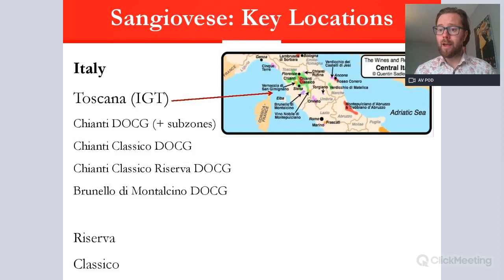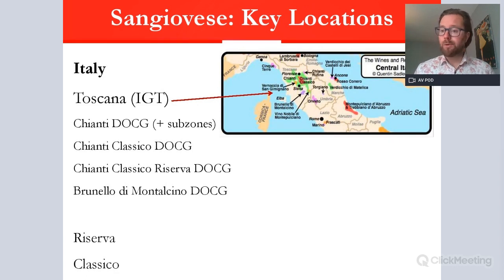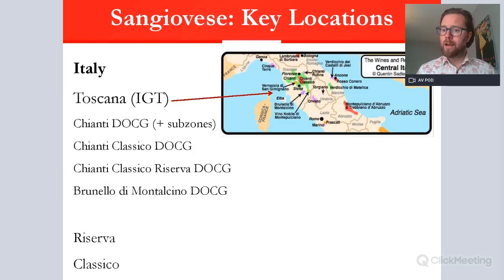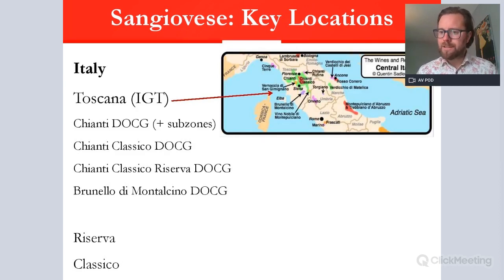Chianti Classico comes from the original heartland — the word 'Classico' meaning that heartland of the district — and will often have more complexity, more oak, and will be destined for longer aging. Chianti Classico Reserva has a minimum stipulation on aging in barrel, giving it more character and premium intensity. Brunello di Montalcino is purely Sangiovese — it can only be Sangiovese — from one of the most interesting, high-altitude sites, producing considerable complexity. 'Reserva' generally denotes more aging in barrel and/or bottle before release, and 'Classico' means from the original historical heartland, with a special affinity for producing higher quality wines.